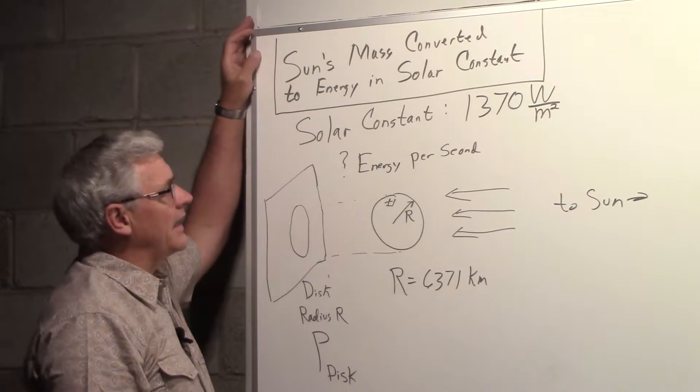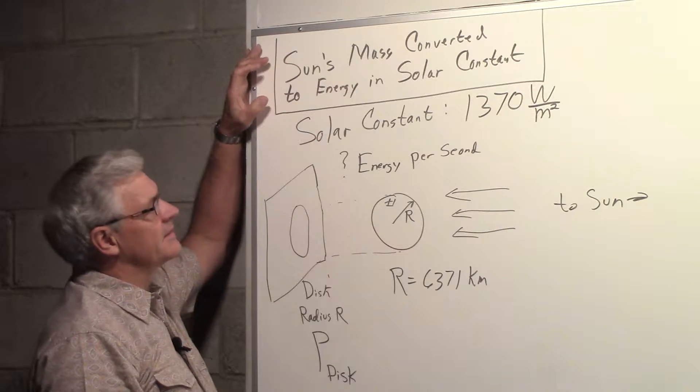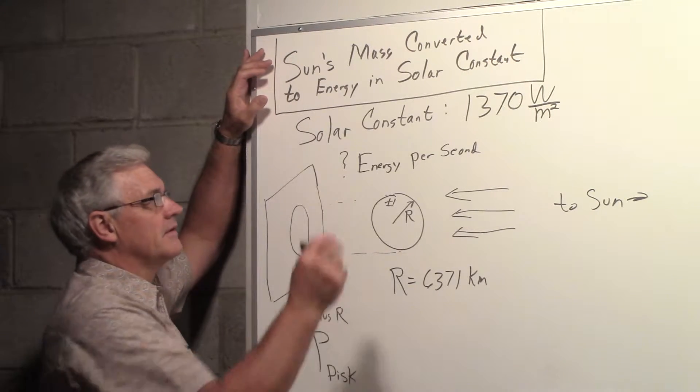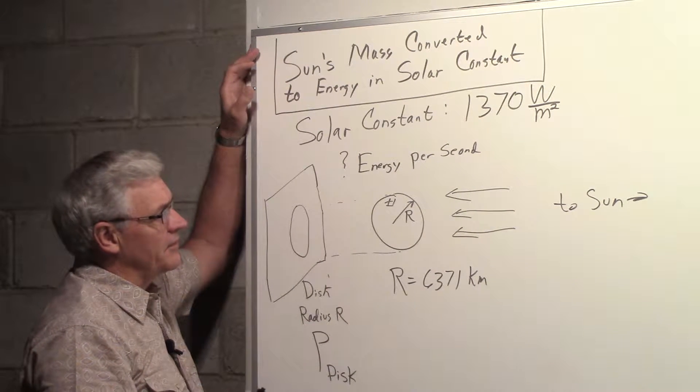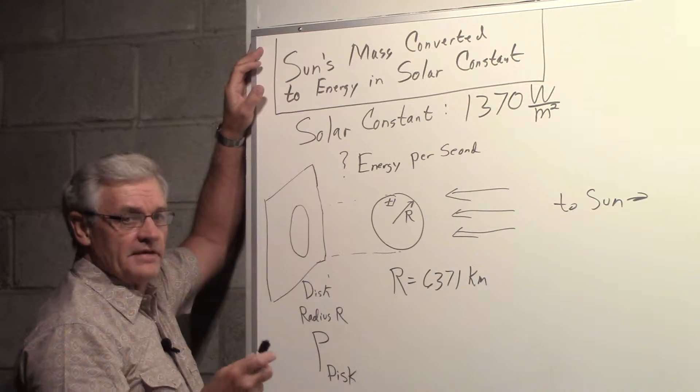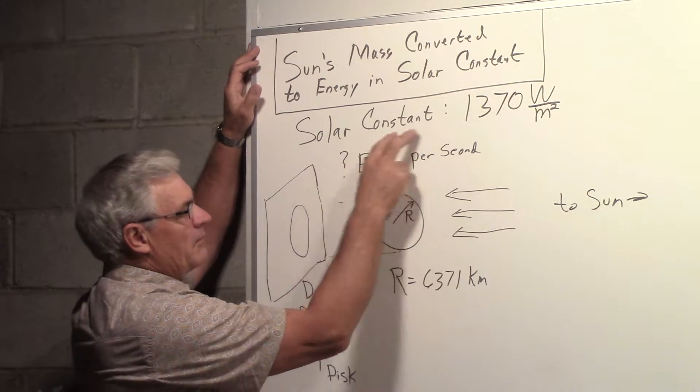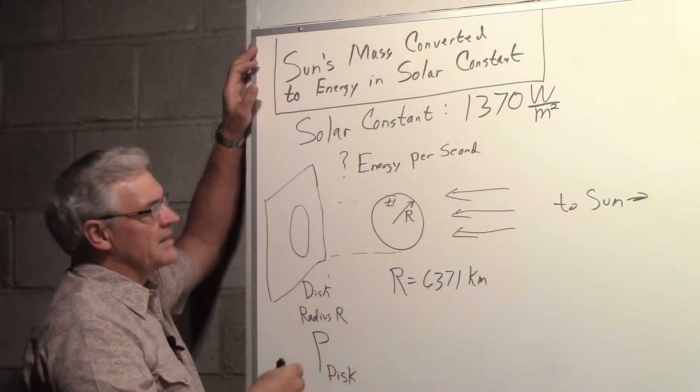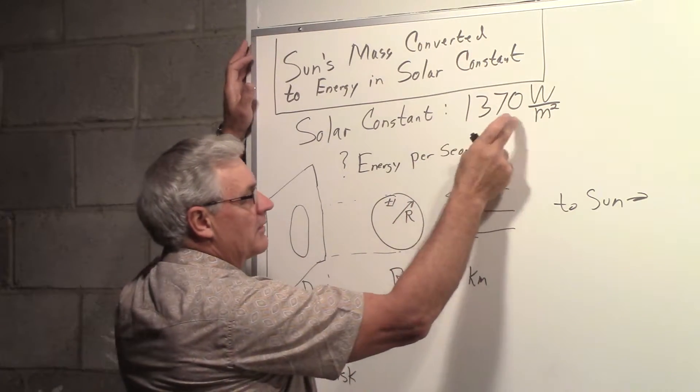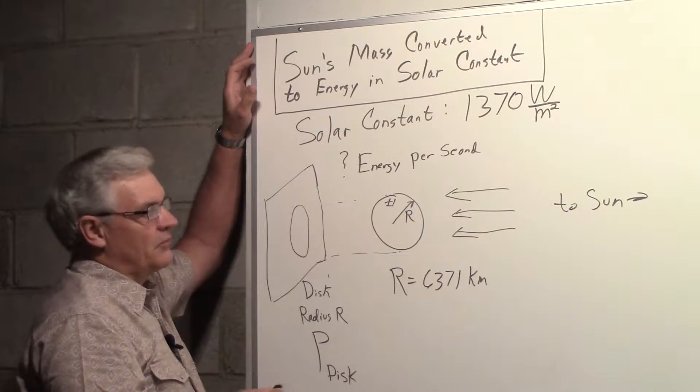We want to take a look at how much of the Sun's mass is converted to energy for the solar constant that we observe at the Earth. In a previous lecture we came up with a value for the solar constant. In the process that we used for a calculation we came up with 1,370 watts per square meter.